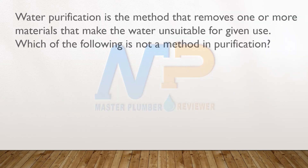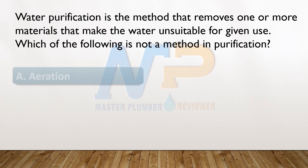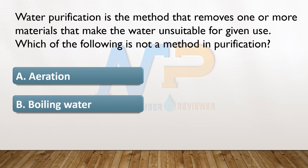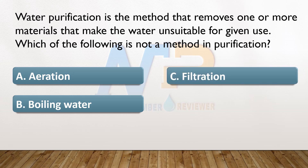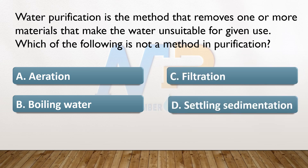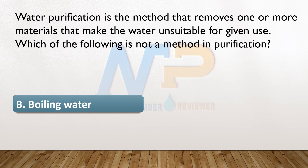Water purification is the method that removes one or more materials that make the water unsuitable for a given use. Which of the following is not a method in purification? A. Aeration. B. Boiling water. C. Filtration. D. Settling sedimentation. The answer: B. Boiling water.